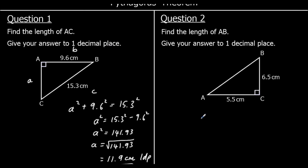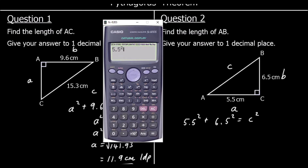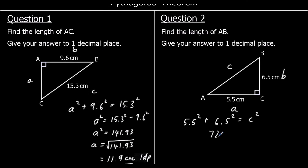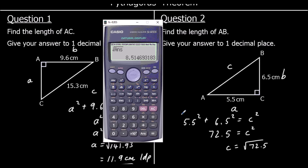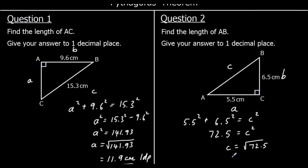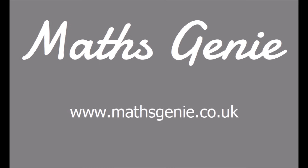Question two: we're finding the longest side, the hypotenuse. A squared plus b squared equals c squared. Typing into the calculator: 5.5 squared plus 6.5 squared equals 72.5. To get c by itself, we square root both sides. So c is the square root of 72.5, which to one decimal place is 8.5.